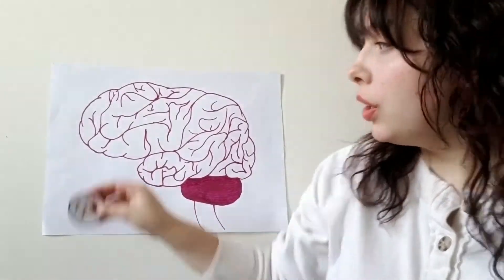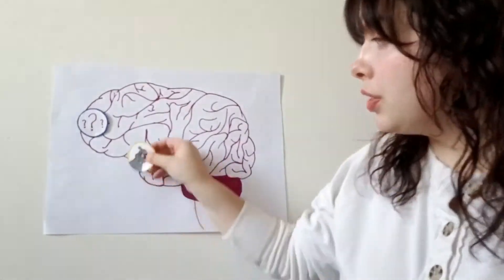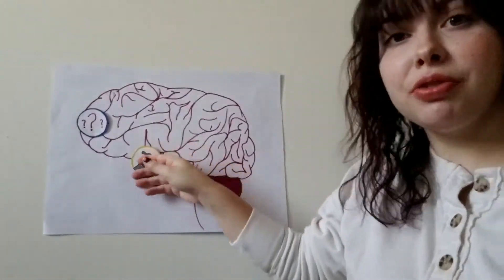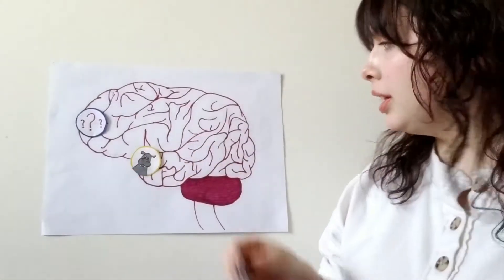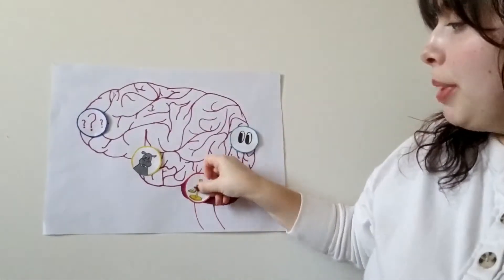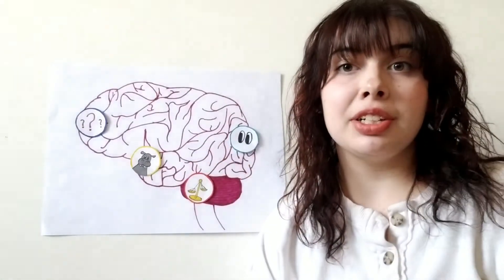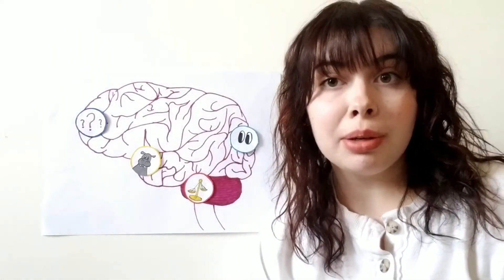Your brain has tons of different regions that control different thoughts and functions. In the frontal lobe, you have the prefrontal cortex, which controls cognitive function. You've also got the hippocampus for memory, the occipital lobe for vision, the cerebellum for balance, and countless other regions that do everything you could imagine.